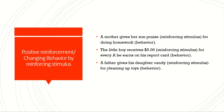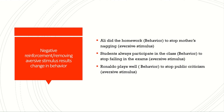Now, negative reinforcement: removing an aversive — a negative stimulus — results in a change in behavior. The behavior comes first and then the reaction. For example, Ali did his homework — this is the behavior. What did he want to change? To stop his mother from nagging. So the behavior caused the removal of that negative action. Once he does the homework, the mother stops nagging — that is the future reflection.